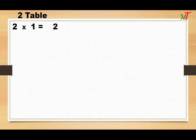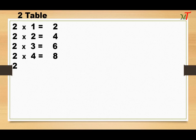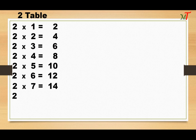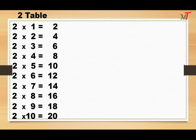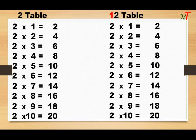Second table: 2 1s are 2, 2 2s are 4, 2 3s are 6, 2 4s are 8, 2 5s are 10, 2 6s are 12, 2 7s are 14, 2 8s are 16, 2 9s are 18, 2 10s are 20. Now using this second table, we are going to write the 12th table.